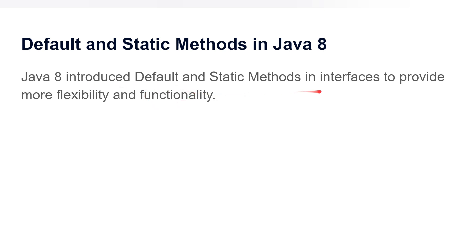Before Java 8, the methods that were present inside the interfaces were abstract methods. An abstract method is a method that does not have any implementation — it only has a declaration — and any class which implements that particular interface needs to provide the implementation of the abstract method. But from Java 8, inside the interfaces you can have a default and static method.